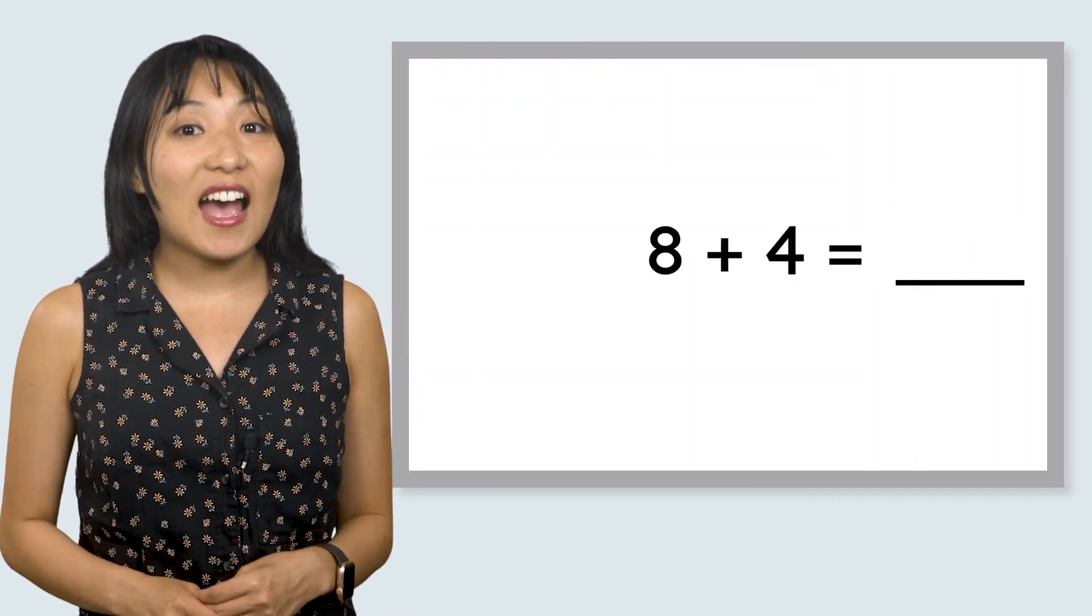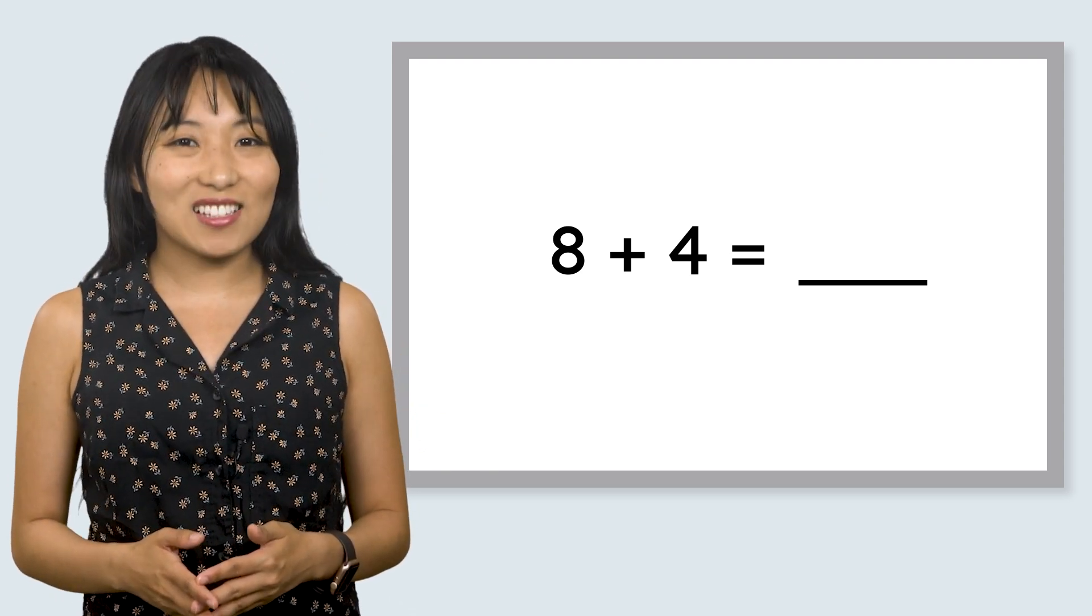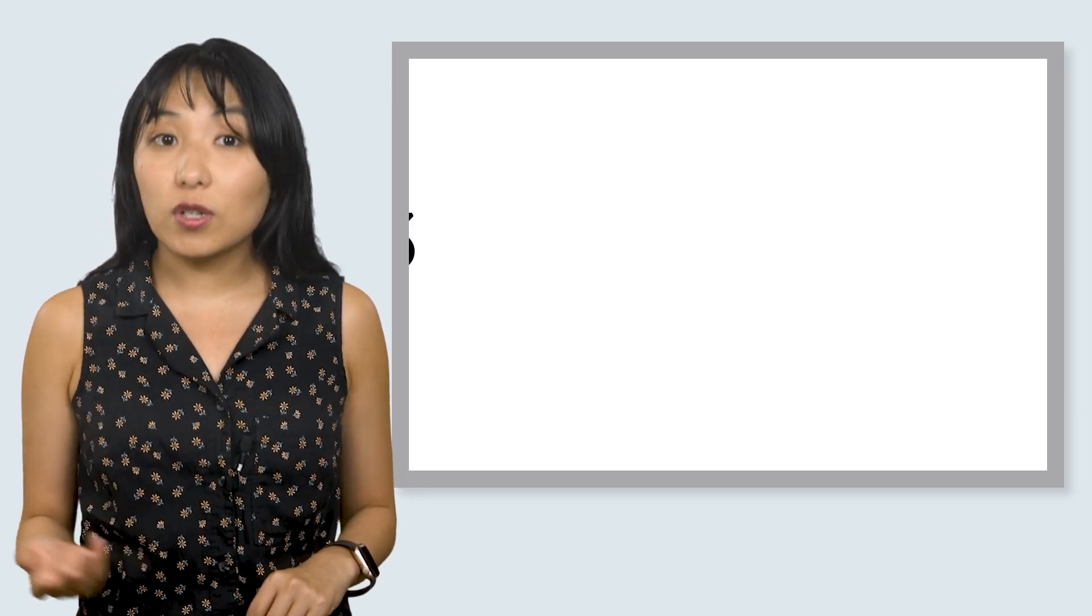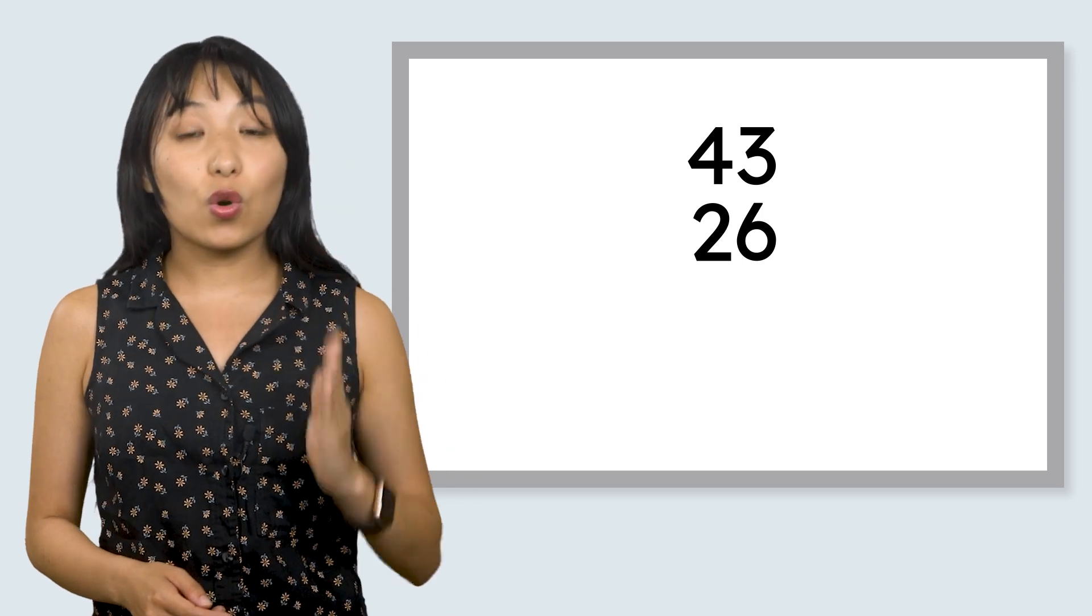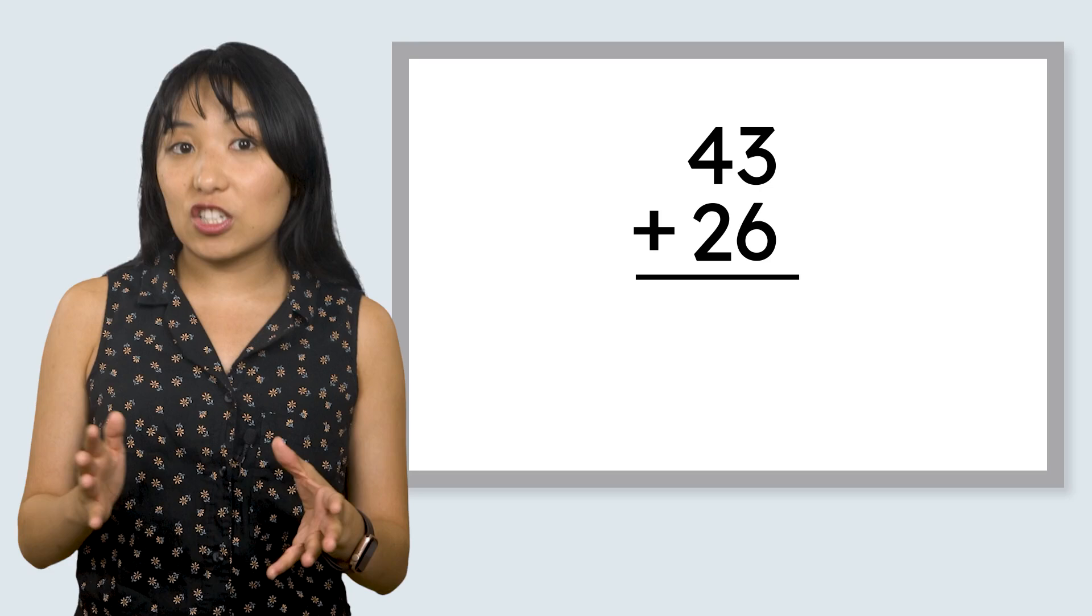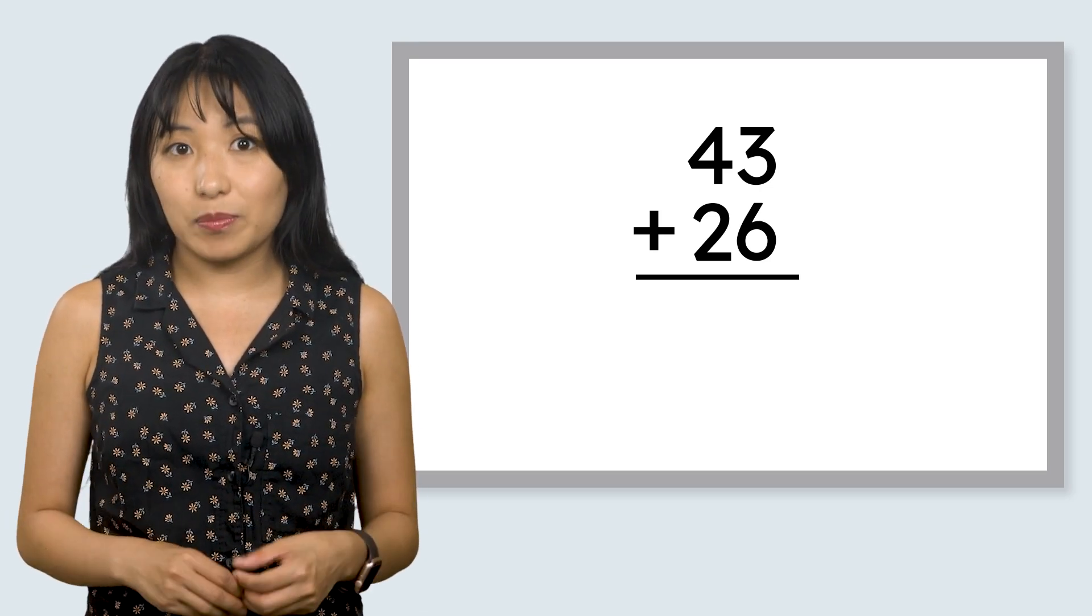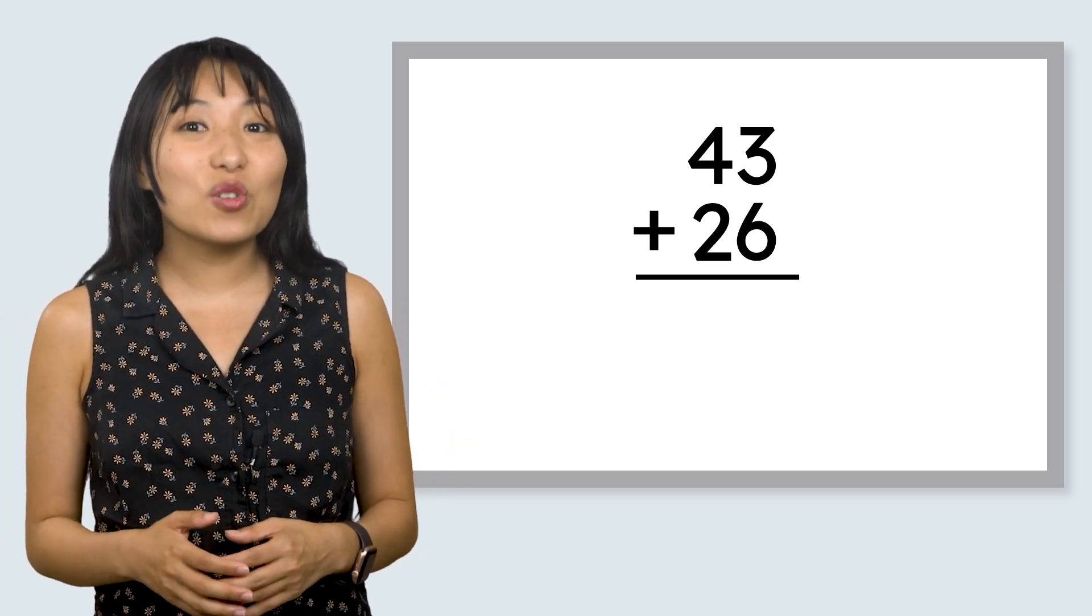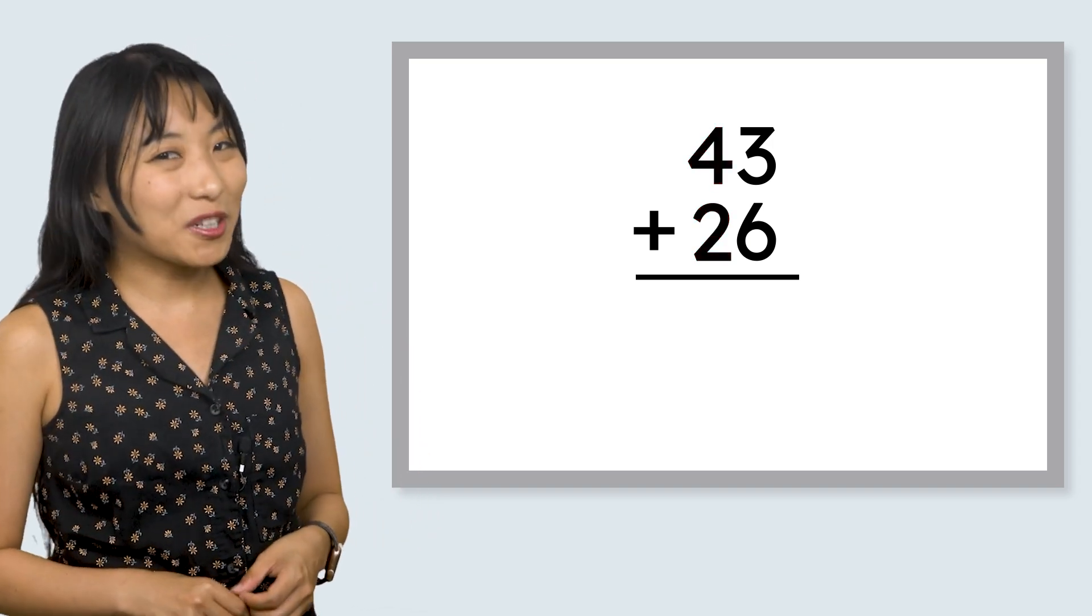We've practiced adding single digit numbers horizontally, or side by side, like this. But when we add two digit numbers, like 43 and 26 for example, we stack them vertically, or on top of each other, like this. The cool thing about vertical addition is that it actually makes adding a lot simpler. Instead of adding two big numbers, we just add the ones together here, and the tens together here. Let me show you how it works.